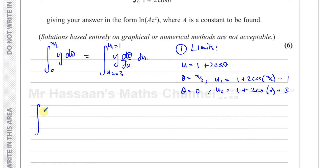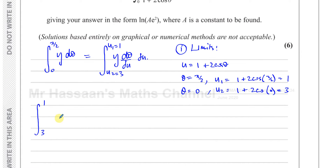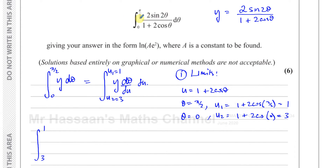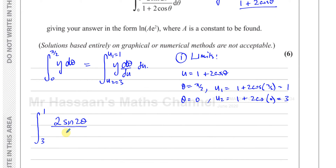Now, for the integrand y, I'll write 2sin2θ over u — because 1 + 2cosθ equals u, I can replace it immediately. Then we need dθ/du. In the end we'll get rid of all the θs, but for now I write the integrand with u in the denominator and the remaining θ-expressions to be simplified. We still have some thetas to deal with.